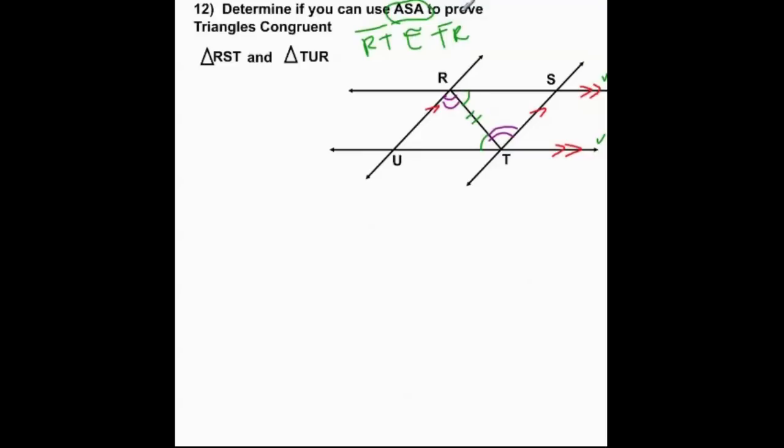So using the angle-side-angle theorem—I mean postulate—we're good to go. So, and I can put A-S-A, little check mark, smiley face, whatever. And if I didn't have these markings, this would be counted incorrect. You've got to show your little mini proof. All right? Alrighty.